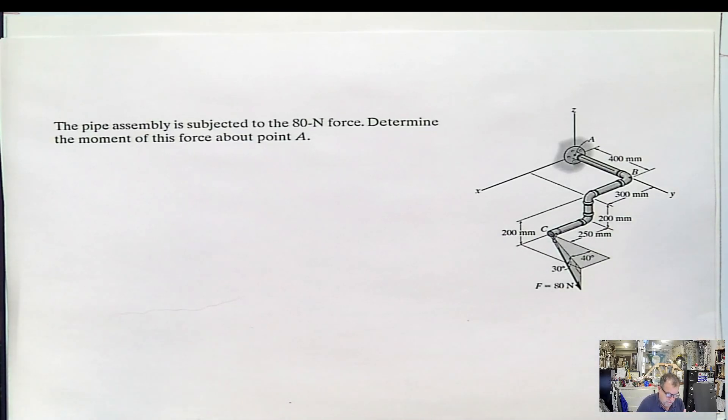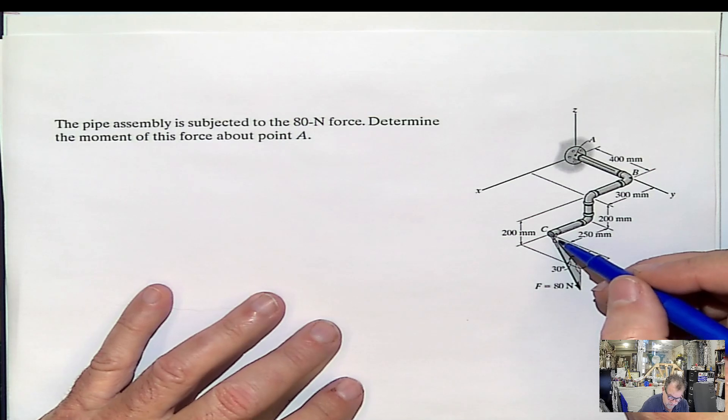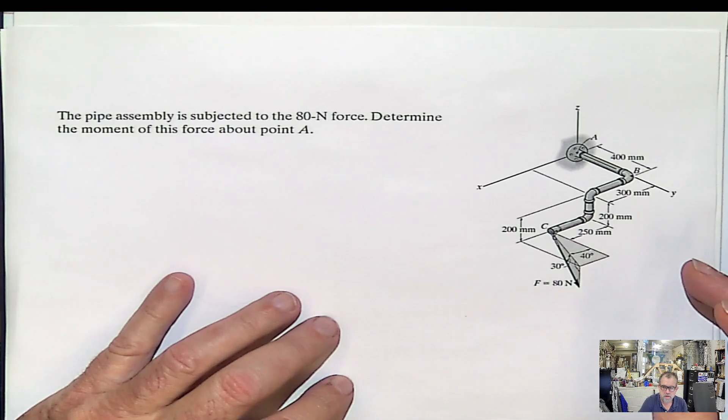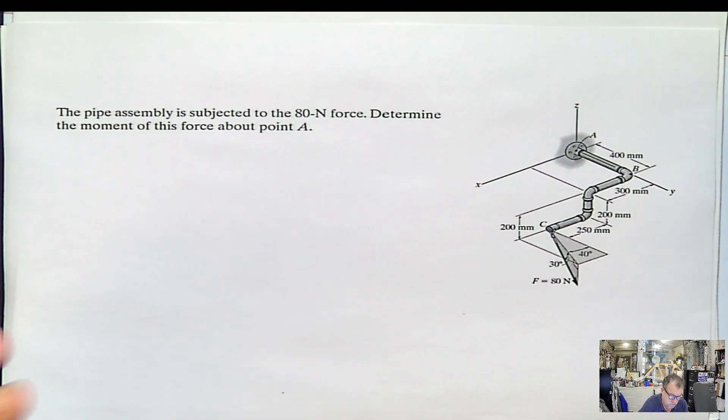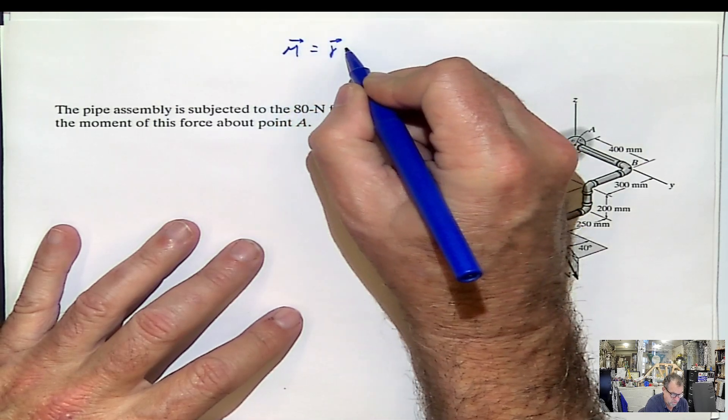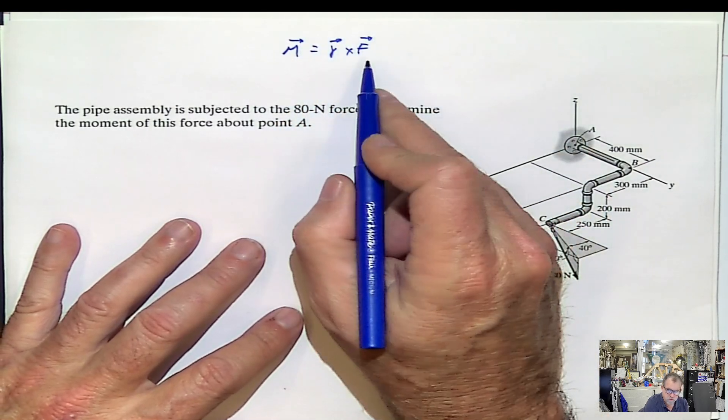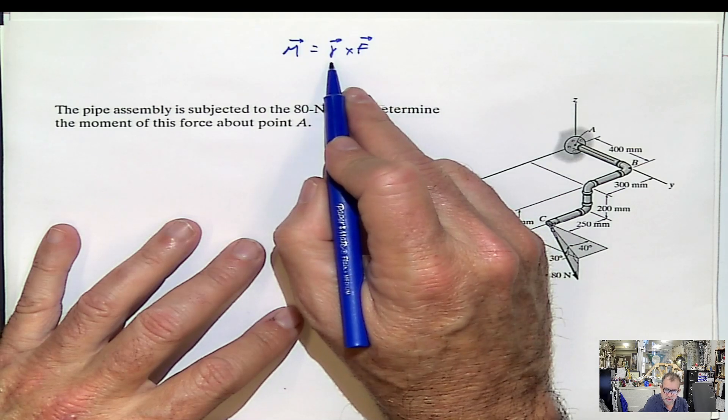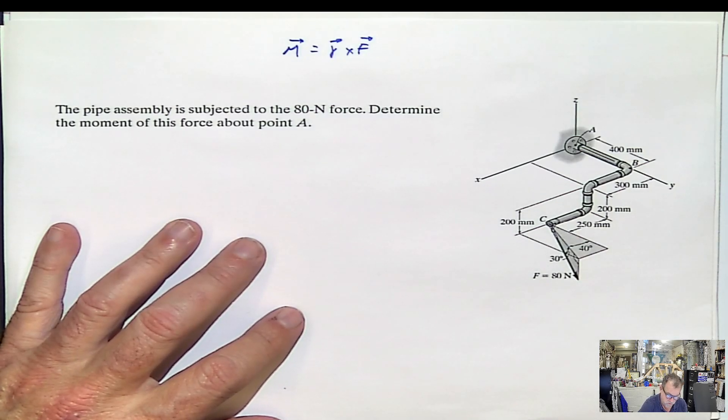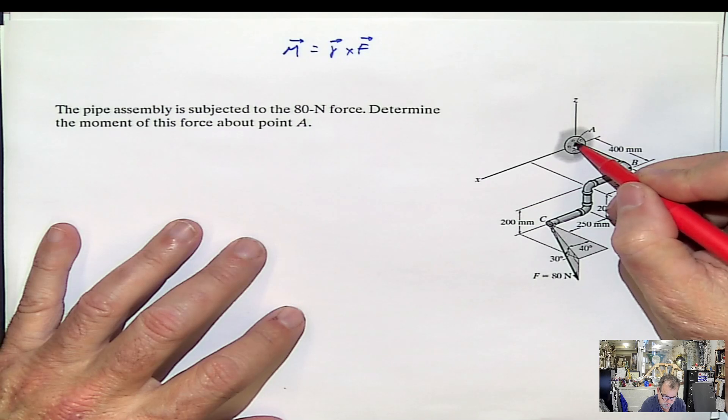Hi again. Now we have this force of 80N and the moment with respect to point A. That's what we have to calculate. So we need two things, remember. Moment will be R cross F. We need the force in Cartesian, and we need a distance. That distance, I repeat this because it's very important, it's from the point that I want to calculate the moment to any point in the line of action of the force.